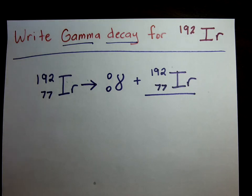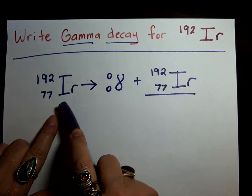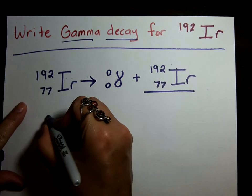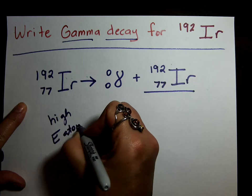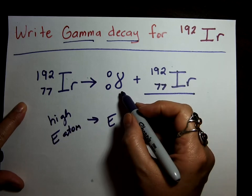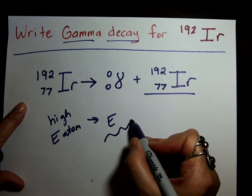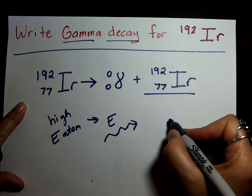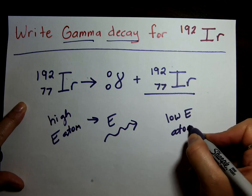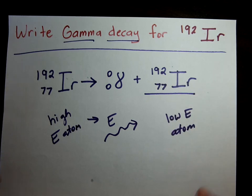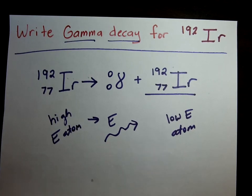So all that happens in gamma decay is we have an unstable high-energy atom. And it releases energy in the form of a gamma ray. And so, we're left with a low-energy atom. But it's the same atom. But it lost that energy in the gamma ray.